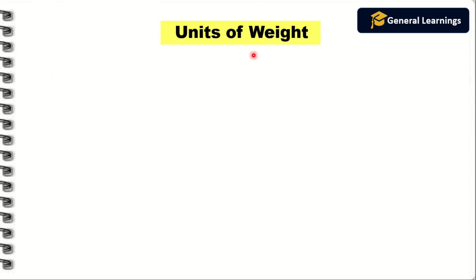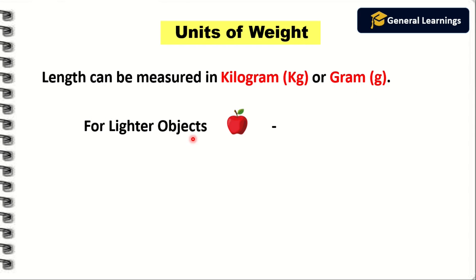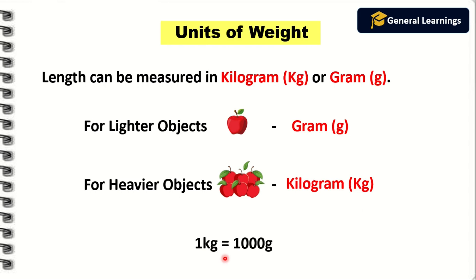Next we will see the unit of weight. Weight can be measured in kilograms or grams. For lighter objects like apples, we use grams to measure their weight. For heavier objects like a group of apples, we use kilograms to measure their weight. One kilogram equals 1000 grams.